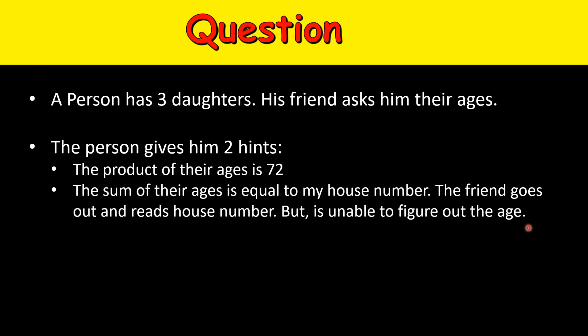The friend goes outside, reads the house number, but based on these two hints he is not able to figure out the ages. So he asks him for a third hint. The person gives him a third hint that the oldest girl loves strawberry ice cream. Now he is able to answer the ages.